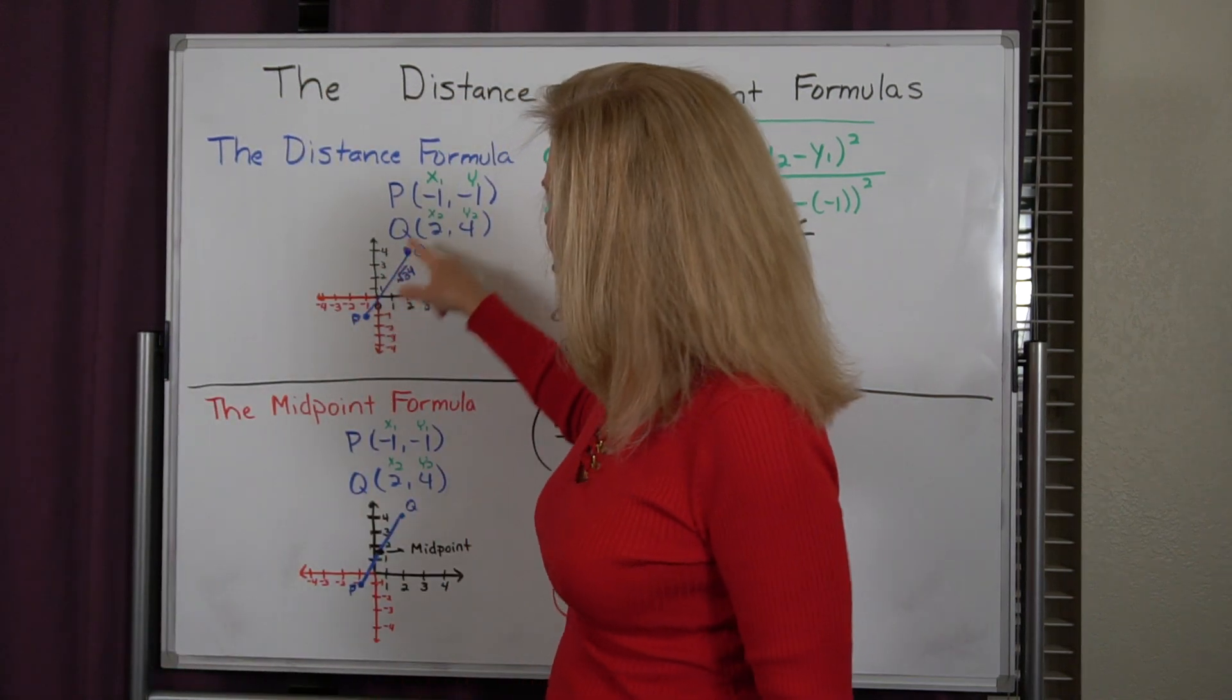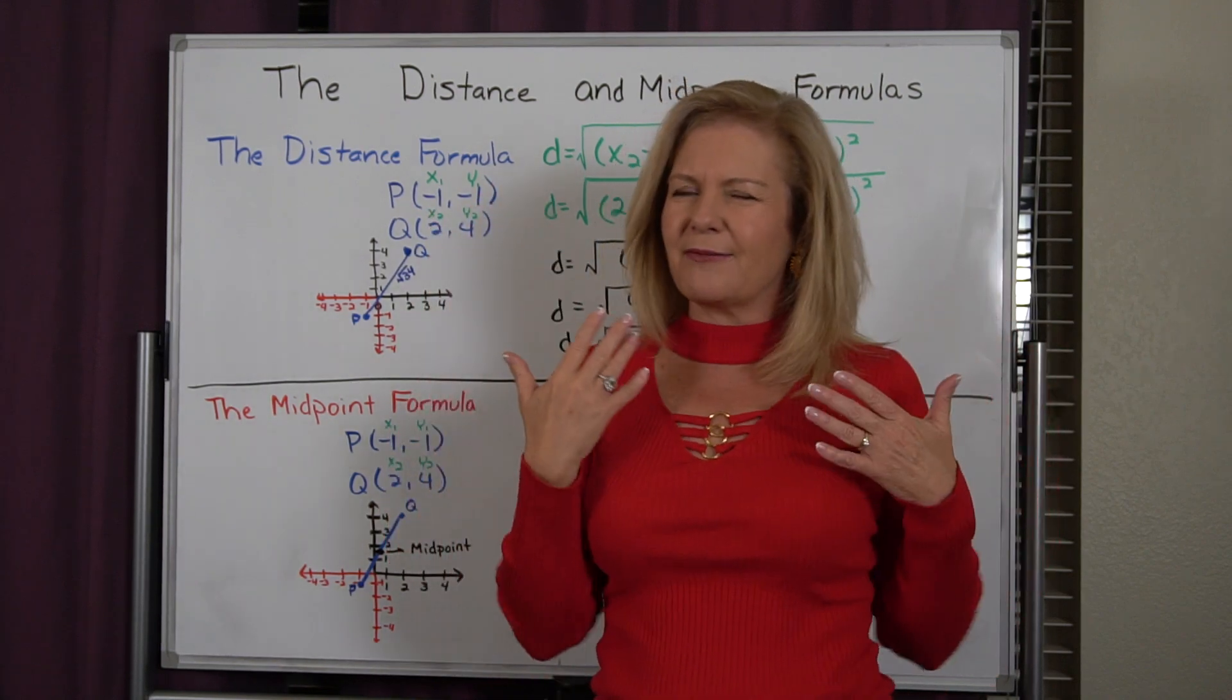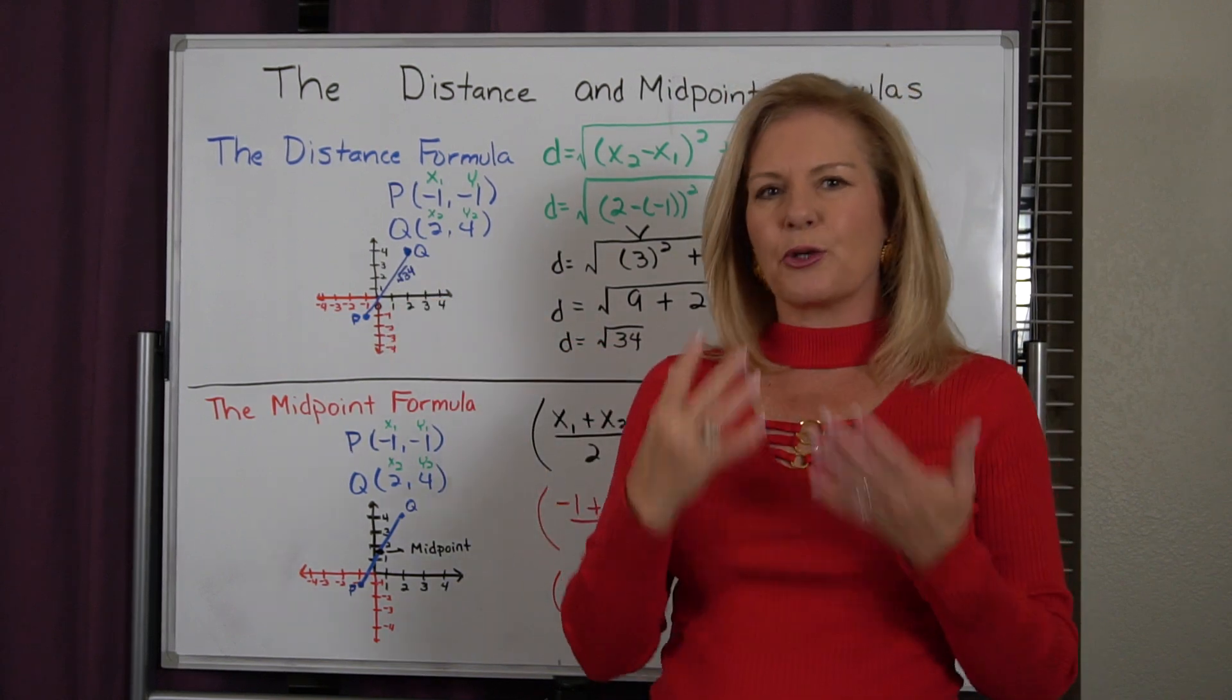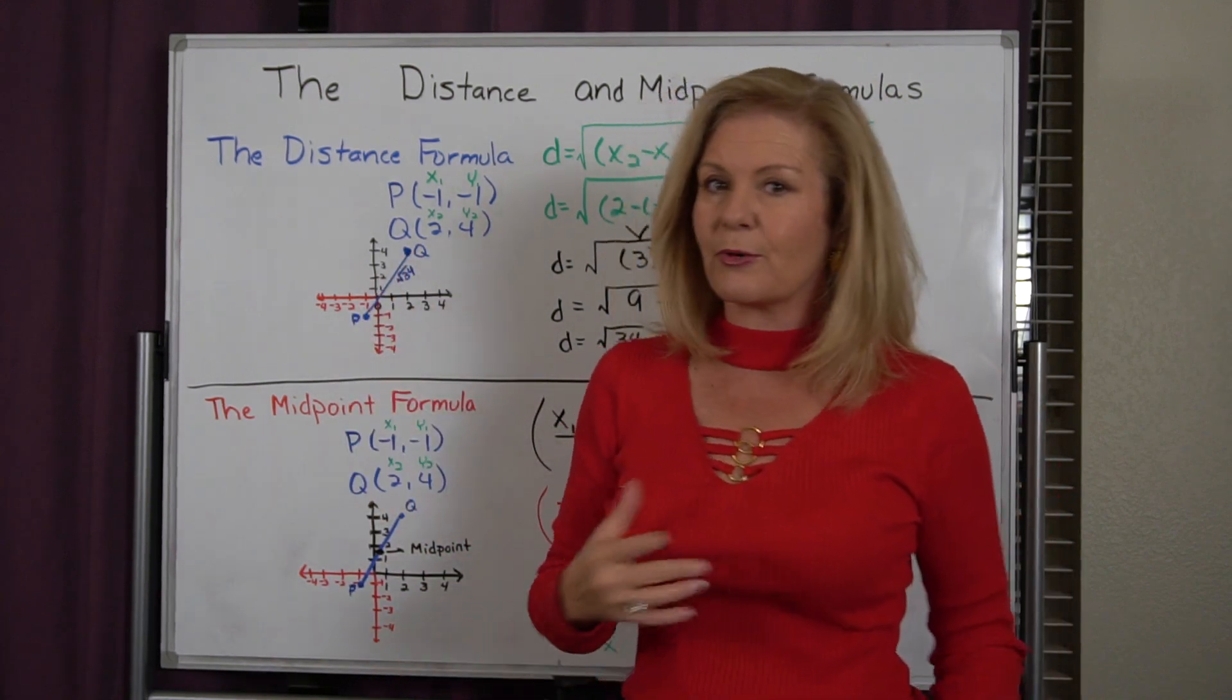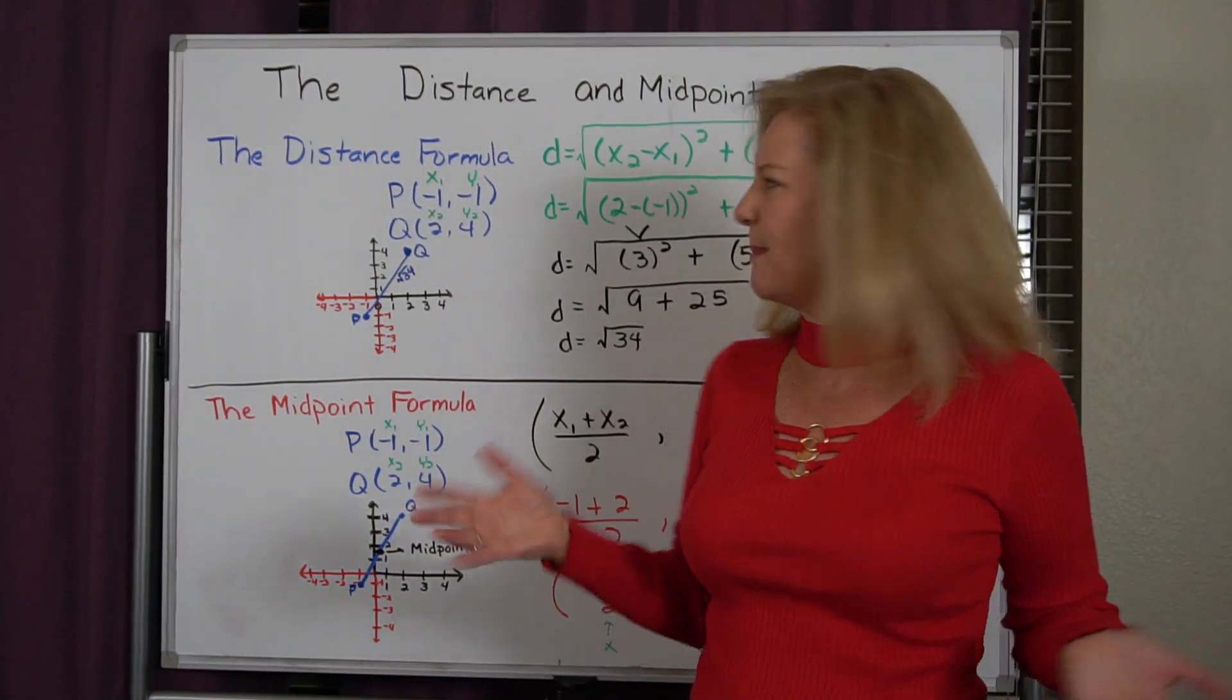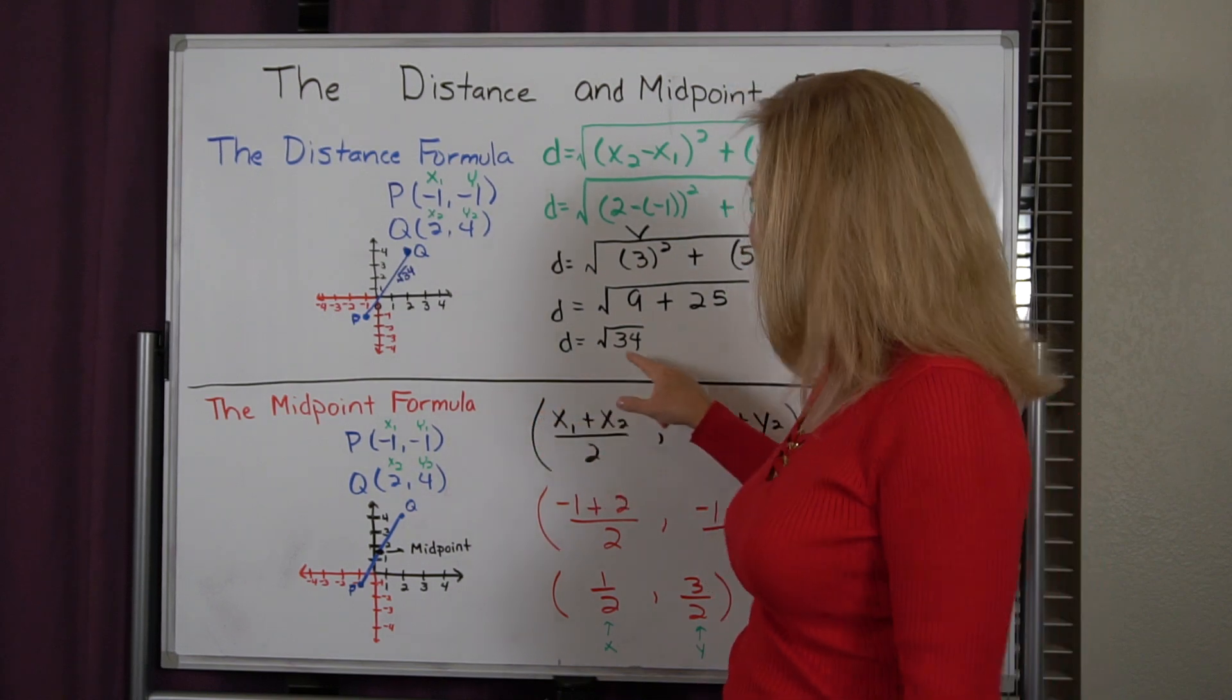Now, that means that distance is the square root of 34, which for most of us is hard to really understand. But the thing is, we could put that into the calculator, and it's going to give us a decimal number. So this distance isn't a whole number. It's a decimal number. And it's perfectly fine for us to leave it as a square root, because in math, that is the same as calling it as a decimal.